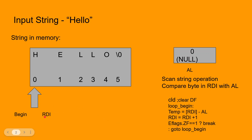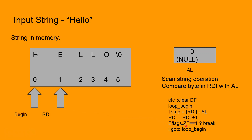We start off by comparing the first byte in RDI, pointed to by the RDI register, with the byte in the AL register. The comparison is performed as a simple subtraction operation. Once we do the subtraction, notice that RDI gets incremented. Once RDI is incremented, the value of the zero flag is consulted. If the zero flag is set, then we know we have found the null byte and we break out of the loop.